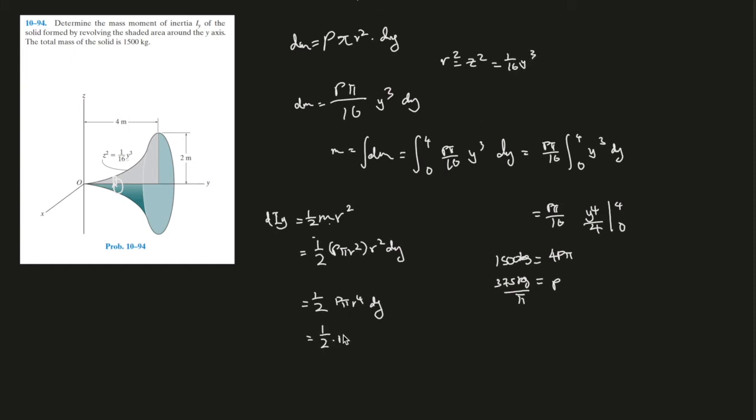So, that would be half times density times π times 1 over 16 times 16, 256, and y to the power of 6. Okay, simplify, 1 over 512 times ρ times π, and y to the power of 6, and dy.